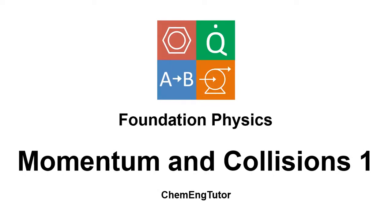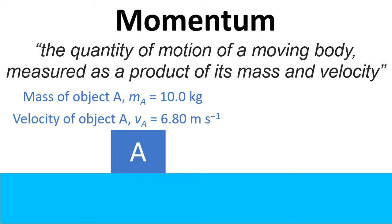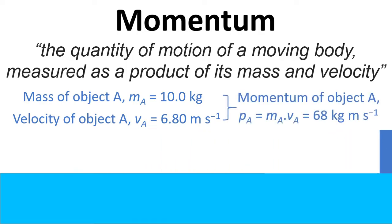In this video I'm going to talk about momentum and collisions. Momentum is the quantity of motion of a moving body, measured as a product of its mass and velocity. So if we have a mass of object A being 10 kilograms and a velocity of 6.8 meters per second, then the momentum of object A is given by mass times velocity — we use the symbol P for momentum. In this case it's 10 times 6.8, which equals 68 kilogram meters per second.